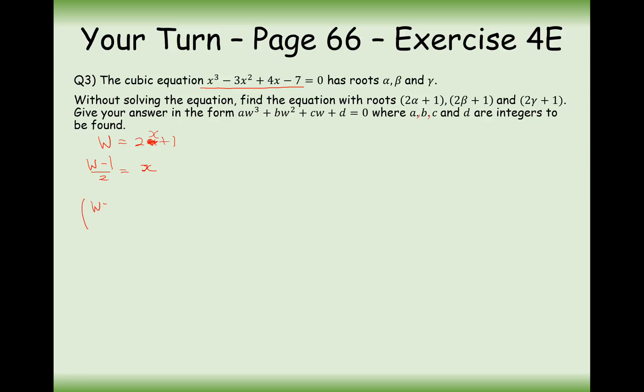So w minus 1 over 2 cubed minus 3w minus 1 over 2 squared plus 4 times w minus 1 over 2 minus 7 equals 0. So the first thing to do will be to expand the fractions on the bottom. So we'll have over 8 here. Minus 3w minus 1 all over 4 here. This will just be 2. We can simplify that to start with. Best thing to do now is to times by 8.